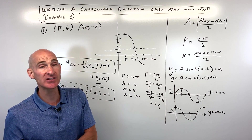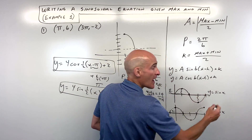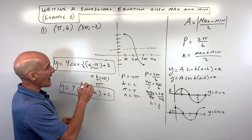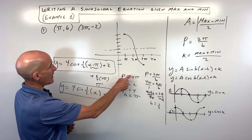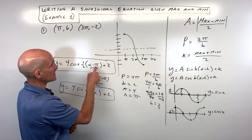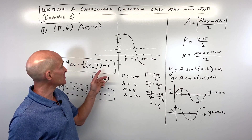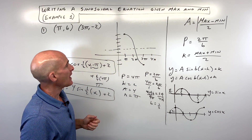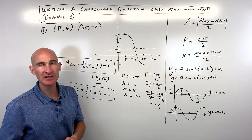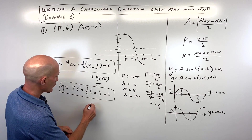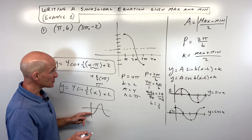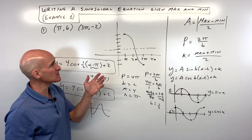You might be saying, aren't there other answers? And you're absolutely right. Because remember, these graphs continue on and on forever in both directions. What you can do if you want other equations is add multiples of the period. For example, if I were to add 4pi, I could say x plus 3pi, and everything else would be the same. Or subtract 4pi and say x minus 5pi — that's just affecting the phase shift. You could also make the amplitude negative to reflect the graph over the x-axis, which is helpful if, for example, you had a graph that looked like a cosine that's just been reflected.